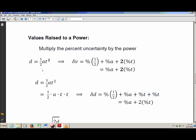So in this example, we've got one half times A times T squared. So using the multiplication division rule, it would just be the percent uncertainty of one half plus the percent uncertainty of A plus two times the percent uncertainty of T. One half is a constant. That means it's an exact value. It has zero uncertainty. So its percent uncertainty is actually zero. It drops out of the equation. All we're left with is percent uncertainty of A plus two times the percent uncertainty of T.